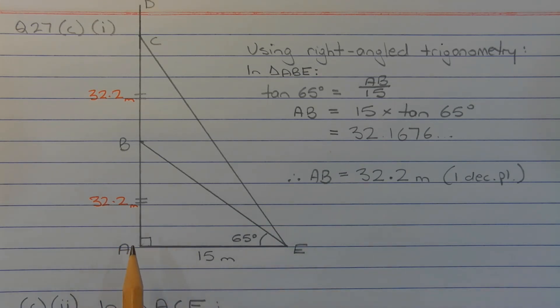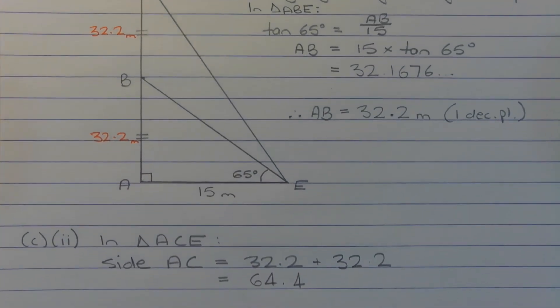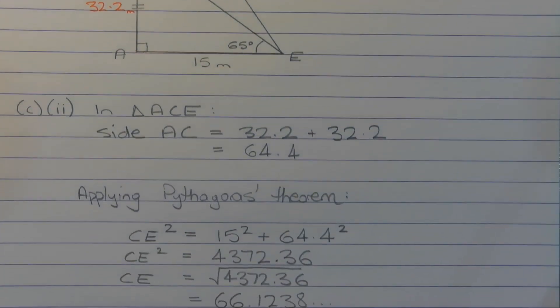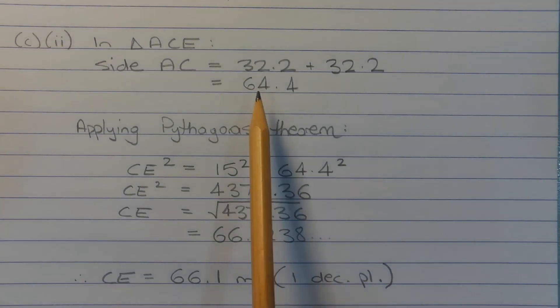We also know that side AB and side BC are equal in length. Now from part 1, we found the length of AB, which was 32.2 meters. And since BC is equal to AB, BC is also equal to 32.2 meters. So the length of AC is the sum of these two values here, 32.2 plus 32.2 meters, and that equals 64.4 meters.